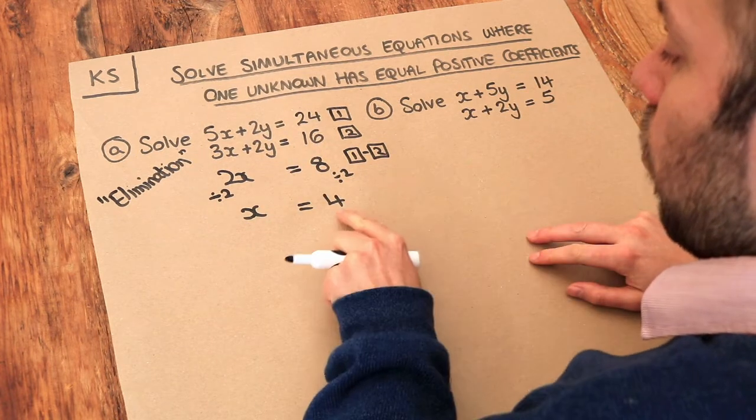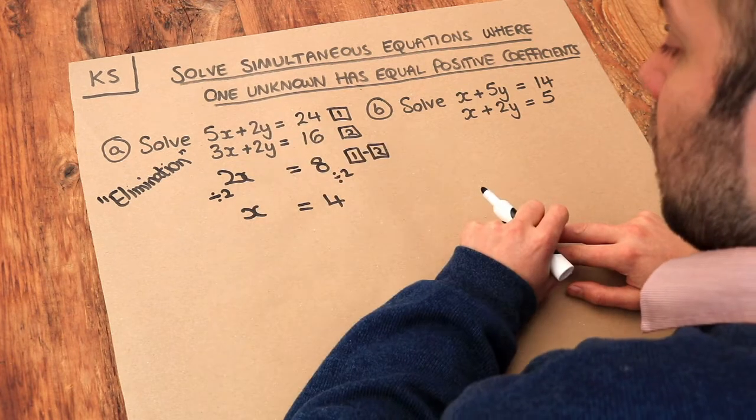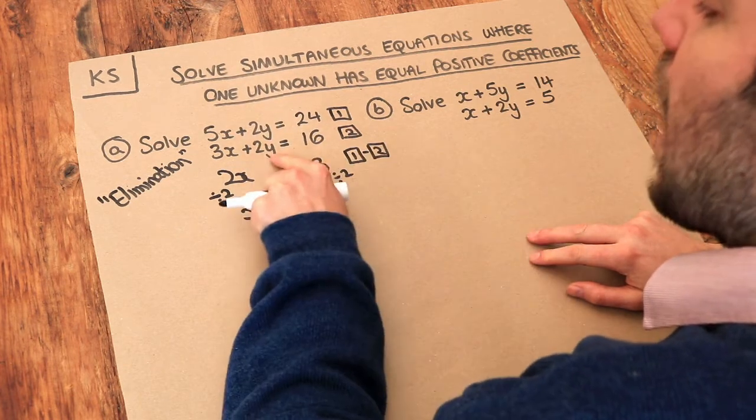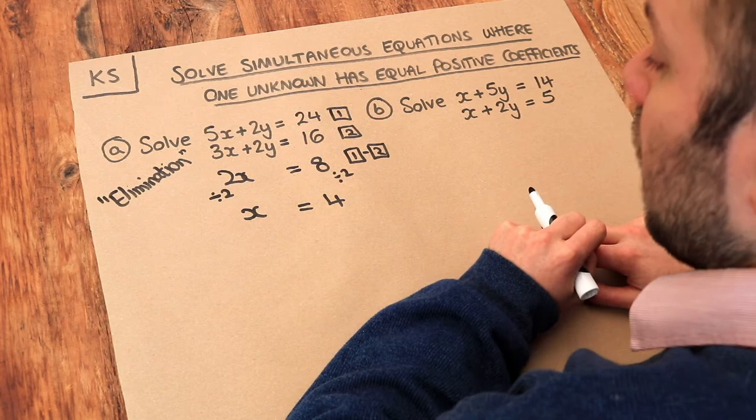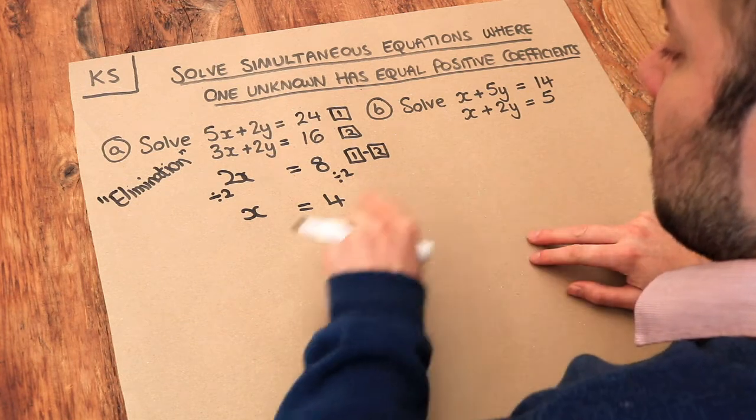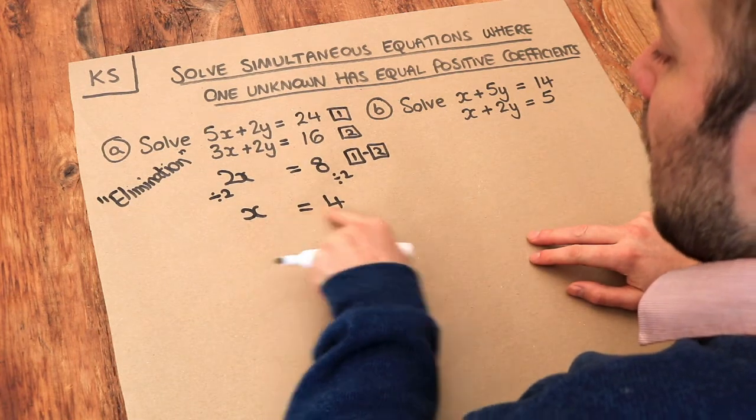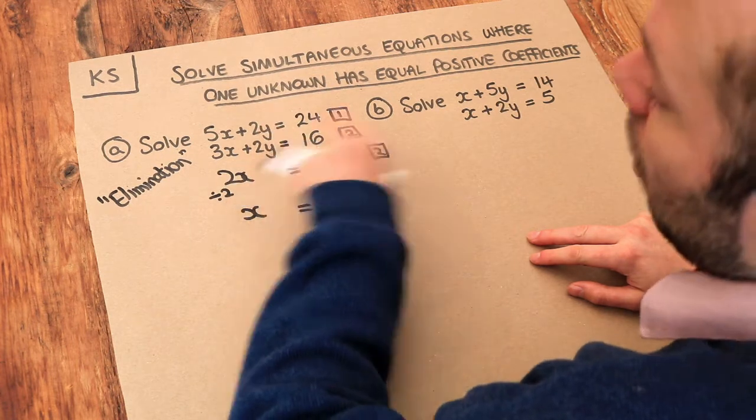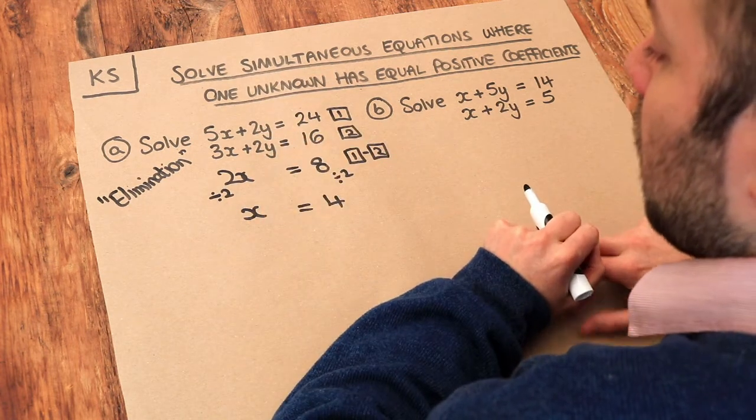So we've now worked out what x is in these two equations. But we need x and we need the value of y. So what we now do is substitute this value of x of 4 into either one of the equations.